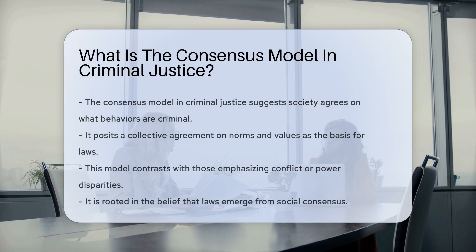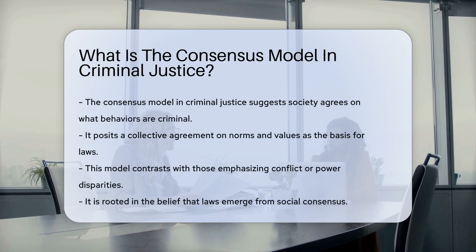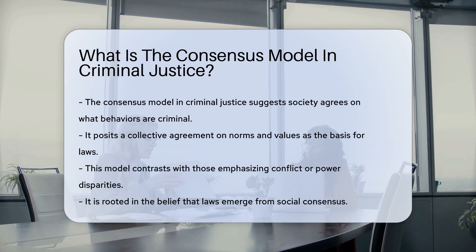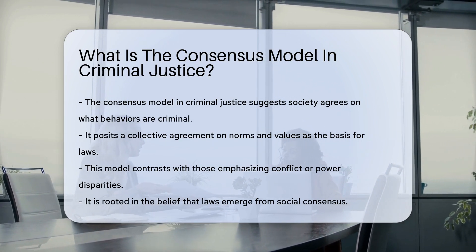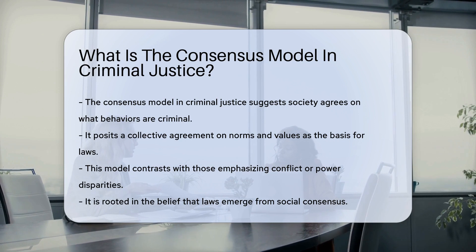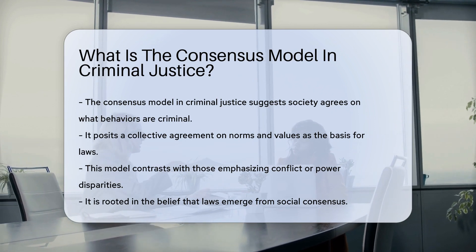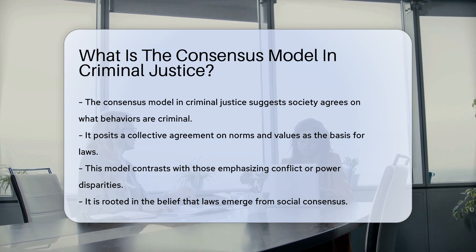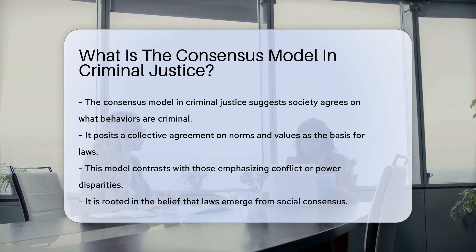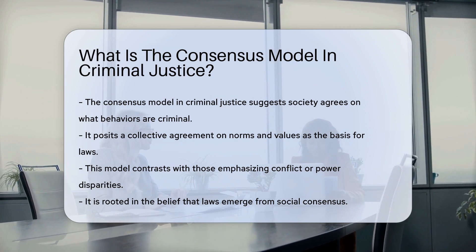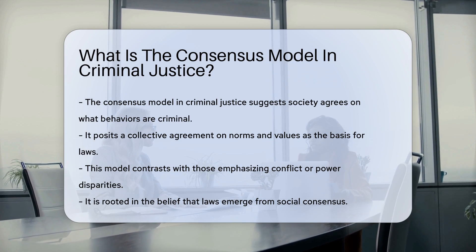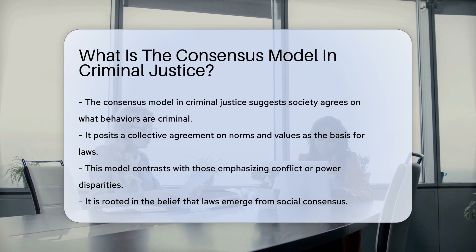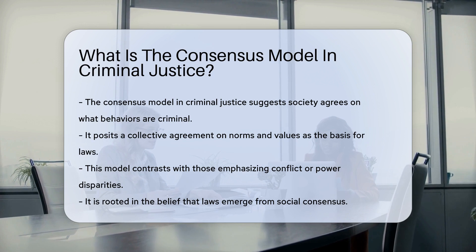The consensus model in criminal justice is a foundational concept that shapes our understanding of law and order. It posits that society's diverse members agree on what behaviors are criminal and warrant sanctioning. This model suggests a collective agreement on norms and values, which forms the basis for laws and legal practices. It contrasts with other models that emphasize conflict or power disparities in the formulation of criminal laws.